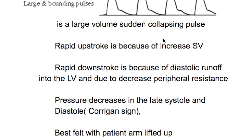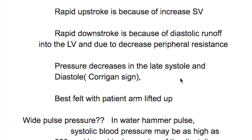In this video we'll discuss water hammer pulse and bisferious pulse and their relationship to aortic regurgitation. Water hammer pulse is a large volume, sudden collapsing pulse. A rapid upstroke is because of increased stroke volume, and a rapid downstroke is because of diastolic runoff into the left ventricle and due to decrease in peripheral resistance. Pressure decrease in late systole and diastole is known as Corrigan's sign.